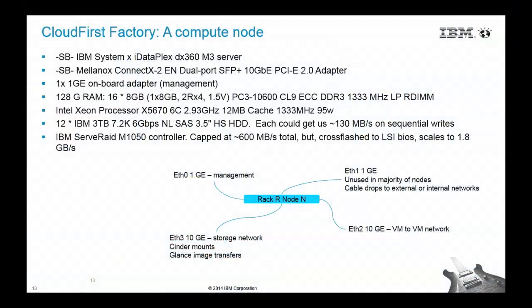We added services as they were needed and added compute nodes as they were needed. We started from a basic install — literally just the install script. The hardware was IBM iDataPlex DX 360s. We had Mellanox ports, 128 gigabytes of RAM, six cores, twelve three-terabyte disks on each machine, and also a RAID M1050 controller. It was pretty well stacked up.